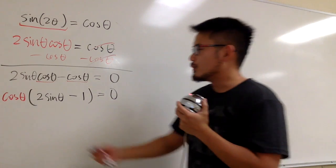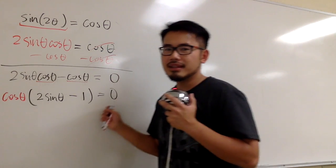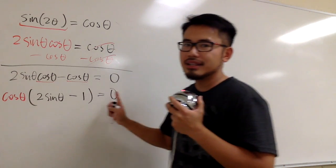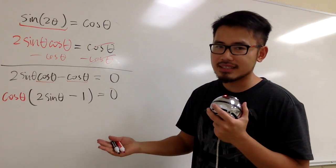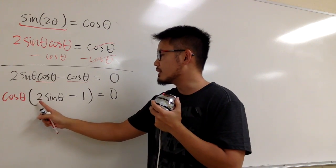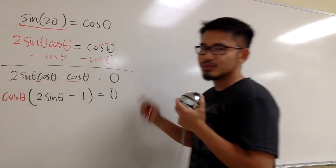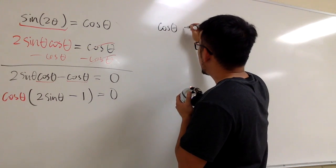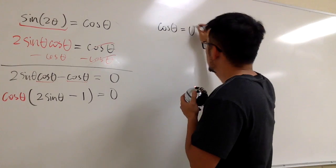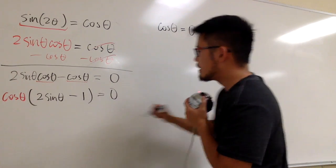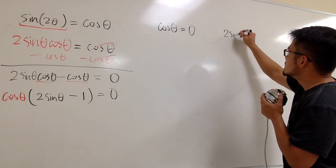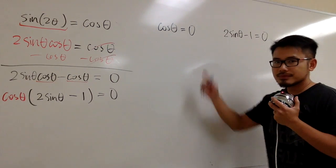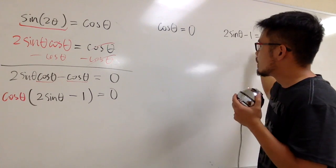And now what? We have 2 factors that's multiplying, it's equal to 0, that means we have cosine θ equal to 0, and then we have to focus on that. And then second of all, we have to focus on this part equals to 0. So let's put it down individually. Cosine θ is equal to 0, and then the other one, we have 2 sine θ minus 1 equals to 0.